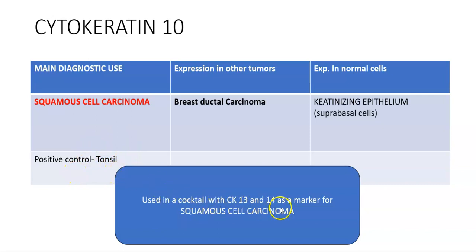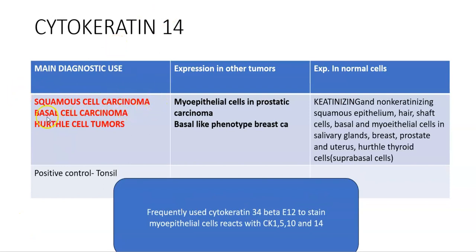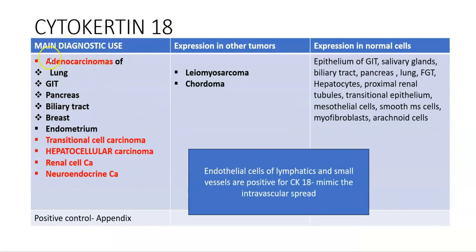CK13 is used for squamous cell carcinoma and is used in combination with CK10 or CK14. CK14 is used for squamous cell carcinoma and additionally for basal cell carcinoma and Hurthle cell tumors; it is also expressed in myoepithelial cells in prostatic carcinoma and basal-like phenotype breast carcinoma. Cytokeratin 34 beta E12 is frequently used to stain myoepithelial cells and reacts with CK1, 5, 10, and 14. CK18 is used for adenocarcinomas of lung, GIT, pancreas, biliary tract, breast, and endometrium, and is also positive in transitional cell carcinoma, hepatocellular carcinoma, renal cell carcinoma, and neuroendocrine carcinoma. It is also expressed in gliosarcoma and chordoma. Importantly, endothelial cells of lymphatics and small vessels are also positive for CK18, which can mimic intravascular spread. The positive control is appendix.